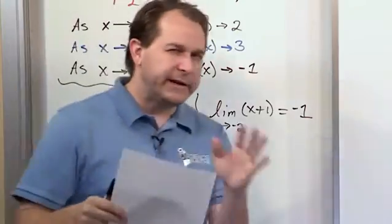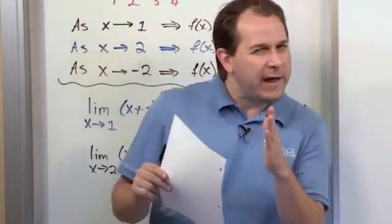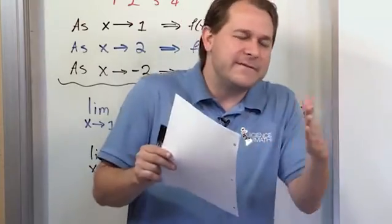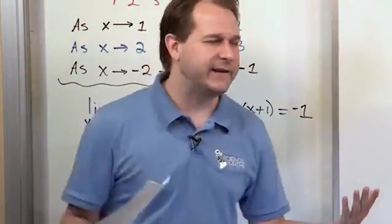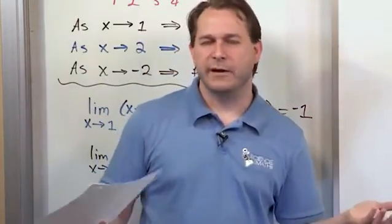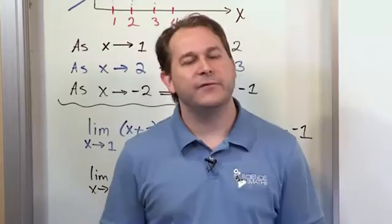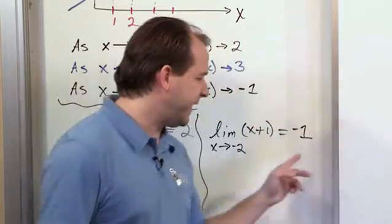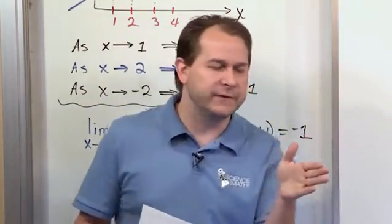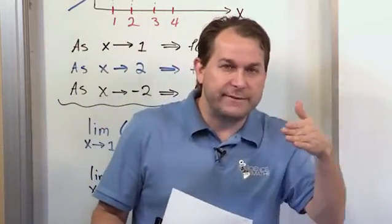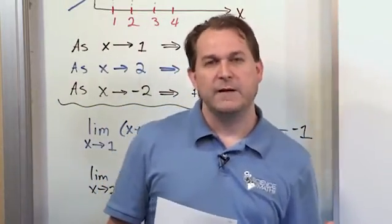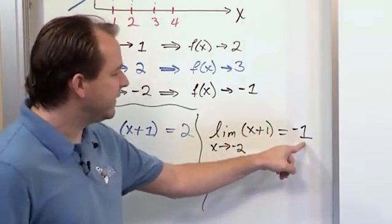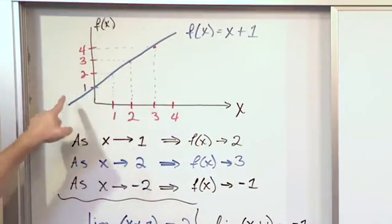Now, I know I'm giving you a little inconsistency — I'm telling you we don't ever quite get to negative 2 and the function never quite reaches negative 1, but then I turn around and say just plug it in to get the answer. The reality is: when you define a limit mathematically, it's going to say that as x approaches a number infinitely close, the limit is the number that the function approaches and gets infinitely close to. But practically speaking, almost all the time you can just plug in the number to get the limit, provided the function is smooth like this.